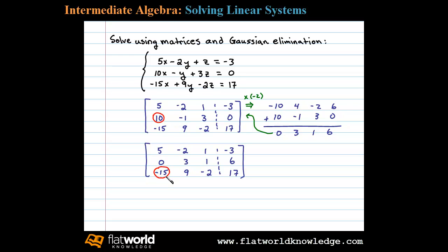To do that we can multiply the first row by 3, and that'll leave us with 15, negative 6, 3, and negative 9.